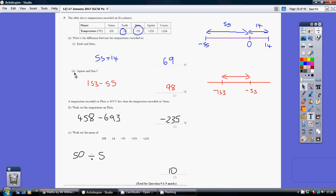Similarly in part II with Jupiter and Mars, we've got minus 55 and minus 153. The distance between these two is simply one take away the other. So it's just this length. So it's 153 take away 55, which is 98.